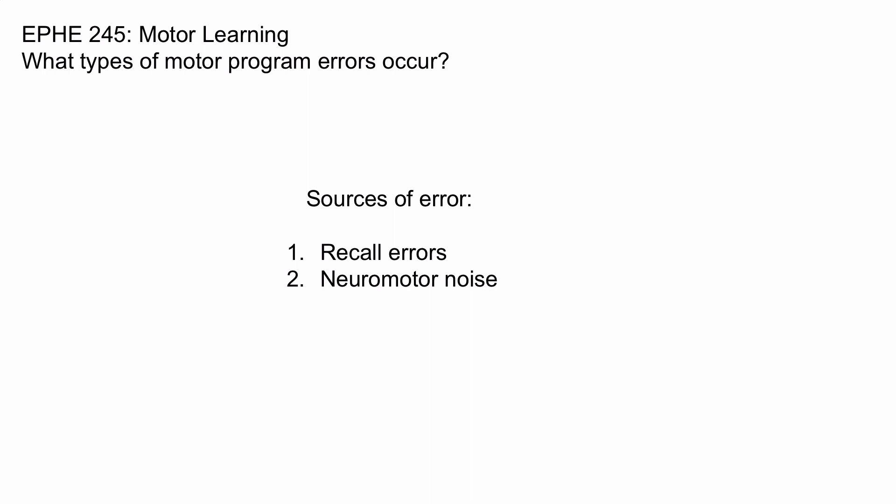A second source of error is neuromotor noise. You've all been tired and known that your motor system isn't performing optimally — this is a form of neuromotor noise. If you want a fun take-home study, try drinking a can of Red Bull and then trying to thread a needle. You'll see an excellent example of neuromotor noise.